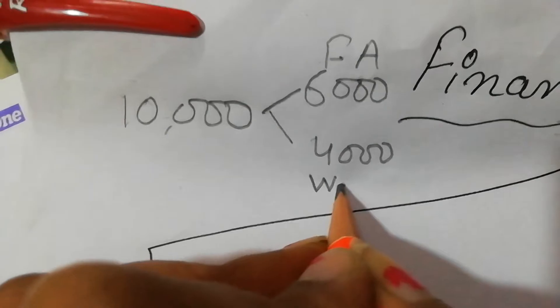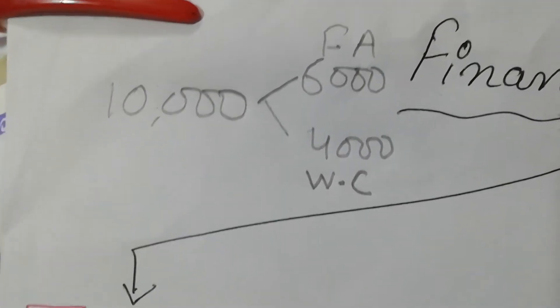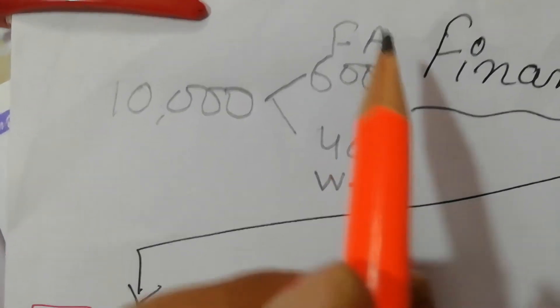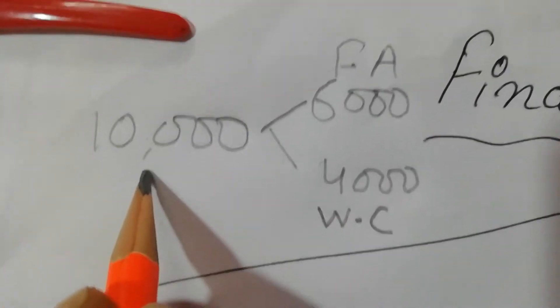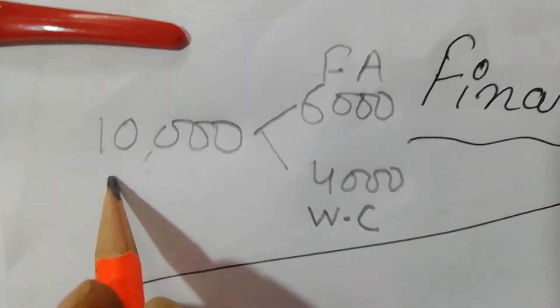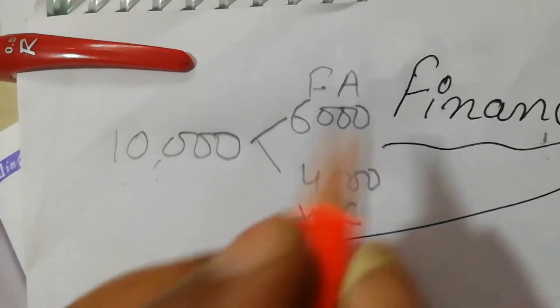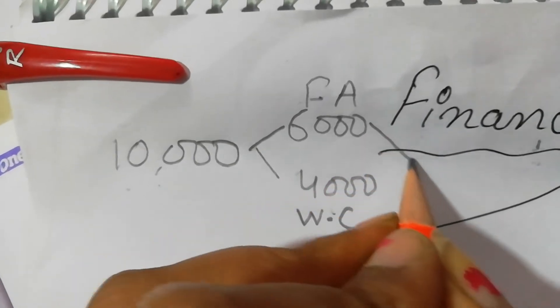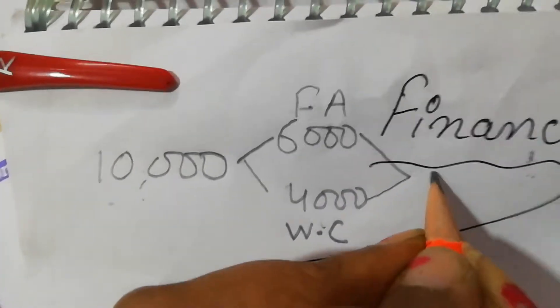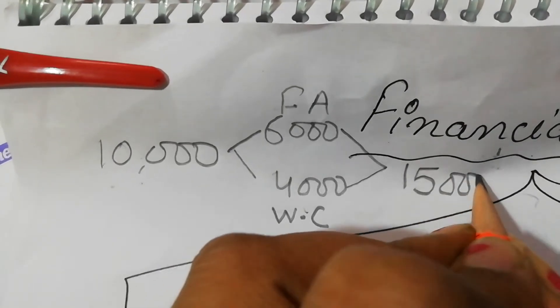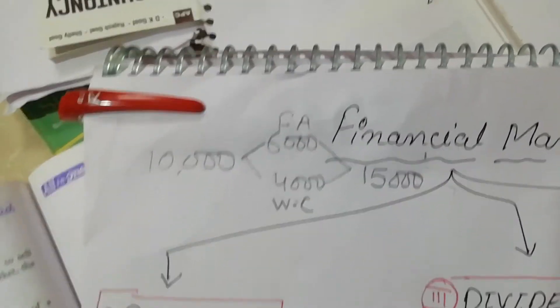You have spent 6,000 rupees as a fixed asset and 4,000 as working capital. Then, if you combine both, you have 15,000 rupees. This is a simple example of financial management.